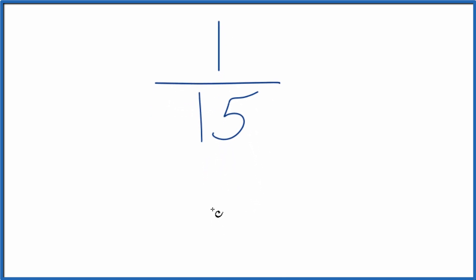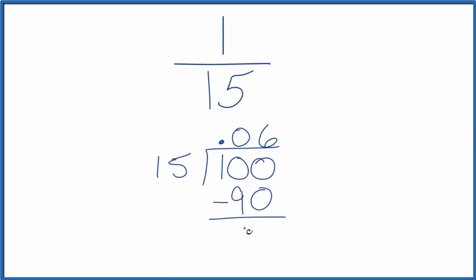So let's just take 1 and see how many times 15 goes into 1. It doesn't go into 1, so let's put a decimal point here. We'll call this 10. It doesn't go into 10, so we'll put a 0 here. Now we can make this 100, and 6 times 15 is 90. So we subtract, and we're left with 10.